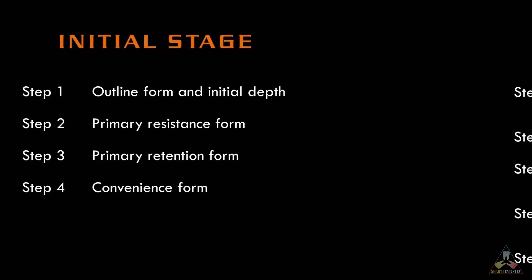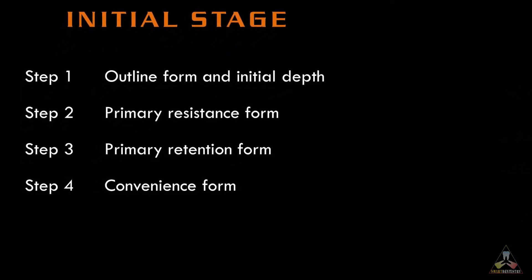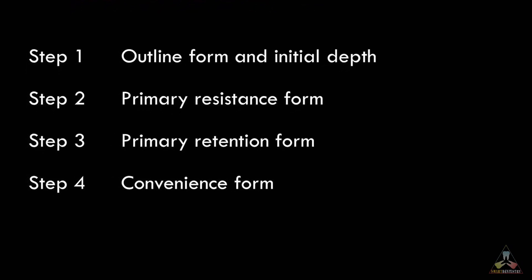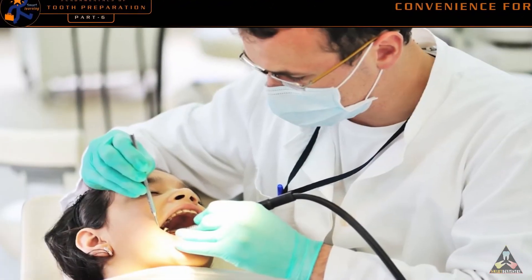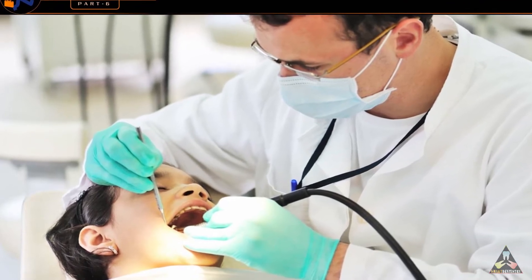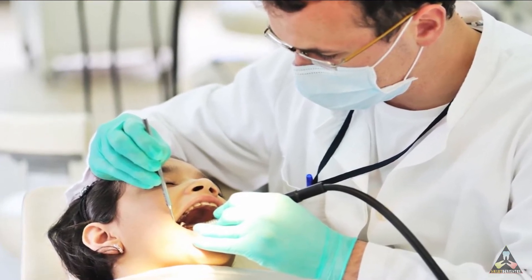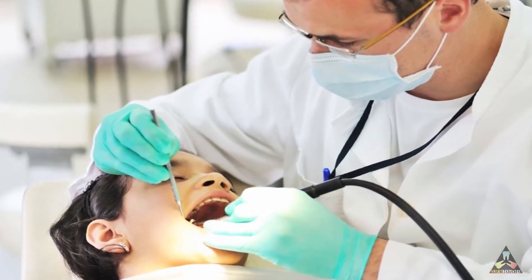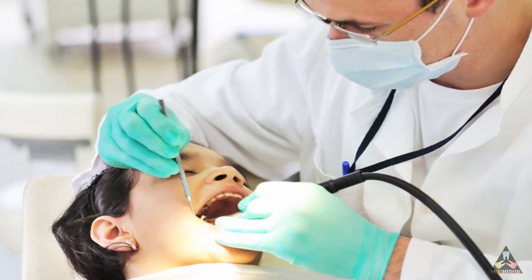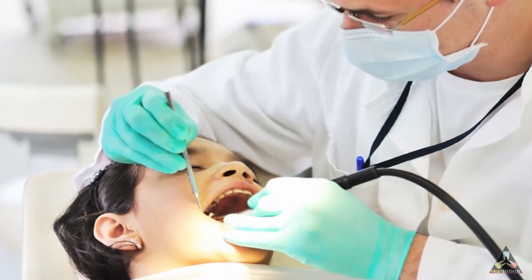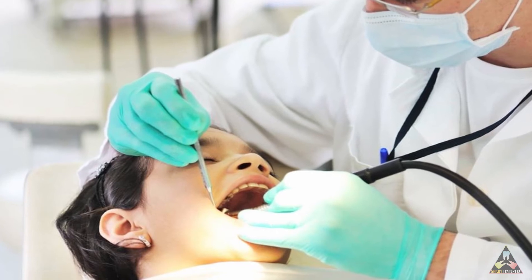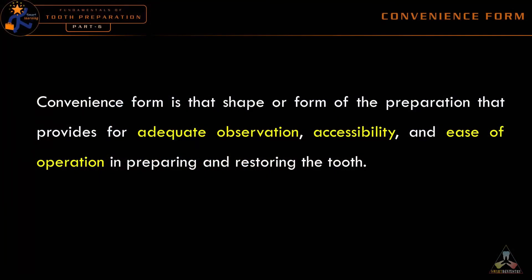In this video, we are going to see about the fourth step in the initial stage of tooth preparation, that is convenience form. Certain features need to be considered while doing the tooth preparation that will enable the dentist to perform the procedures without any difficulties. These features are mostly done to improve the convenience or the ease of working by the dentist. Thus, convenience form is defined as the shape or form of the preparation that provides for adequate observation, accessibility and ease of operation in preparing and restoring the tooth.